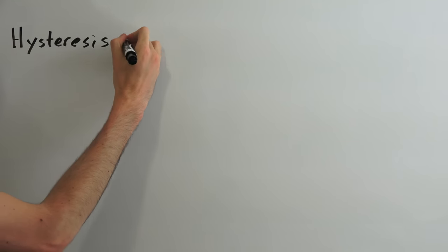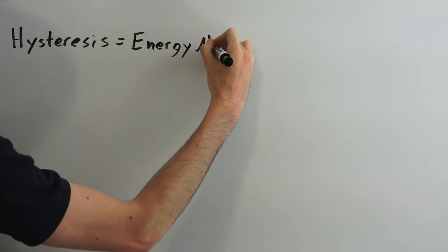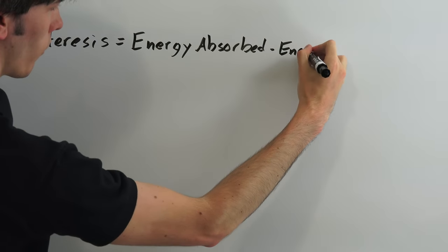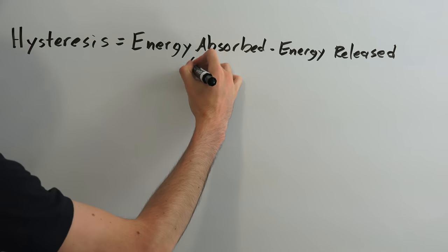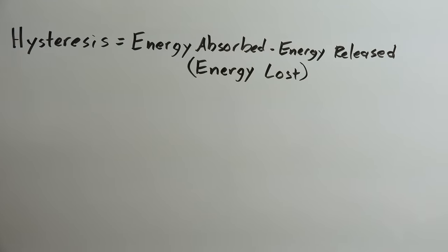Hysteresis is the difference between the amount of energy that is absorbed when a rubber object is stretched or compressed versus how much energy is released when the rubber object returns to its original state. In short, it's the amount of energy lost after a cycle of being stretched.